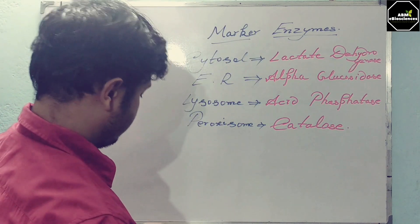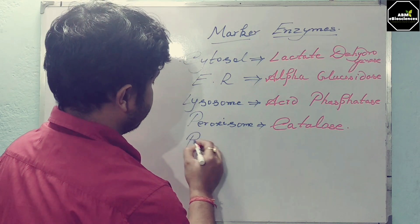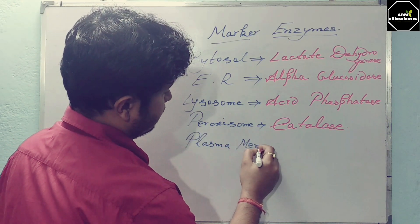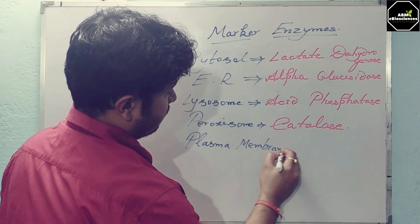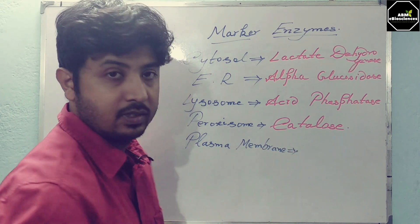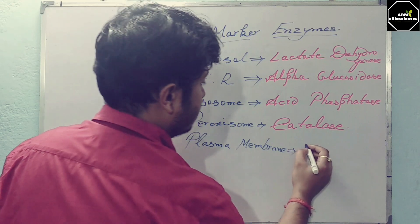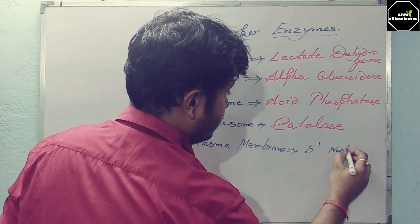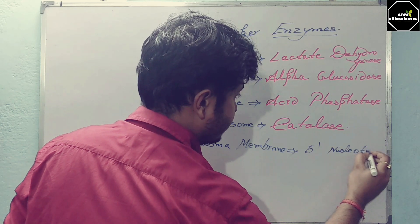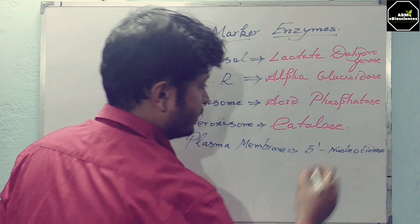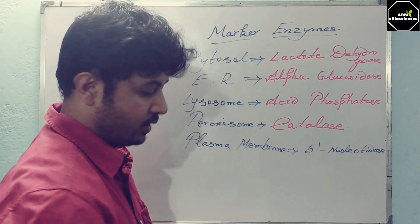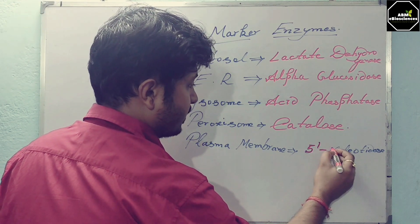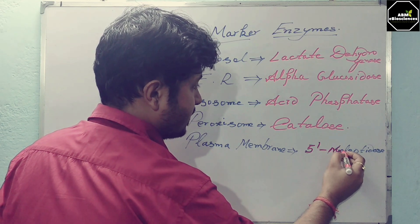Next is the plasma membrane. For the plasma membrane, the marker enzyme you should use is 5'-nucleotidase. This enzyme is used for specifically recognizing and confirming the plasma membrane.